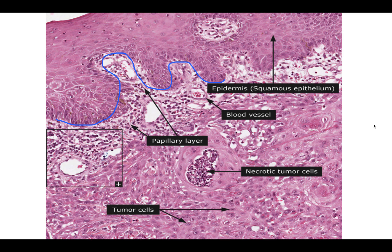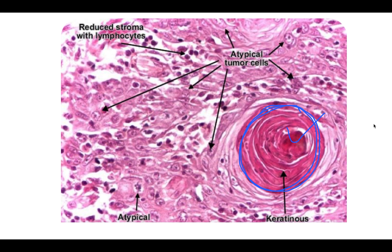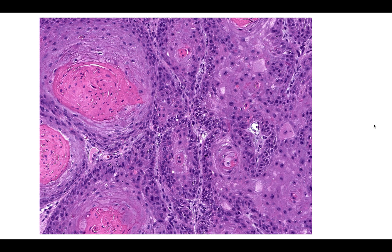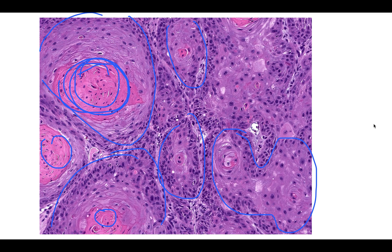Tumor cells are present in the dermis and are pleomorphic with high NC ratio — meaning the nucleus is larger relative to the cytoplasm. The cytoplasm is eosinophilic because squamous cell cytoplasm is eosinophilic. Characteristic keratin pearls can be seen: beautiful whorls of squamous cells present in nests and lobules with keratin production inside. Multiple keratin pearls with very clear keratinization indicate a well-differentiated squamous cell carcinoma.